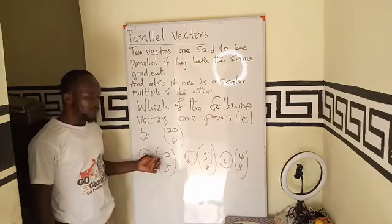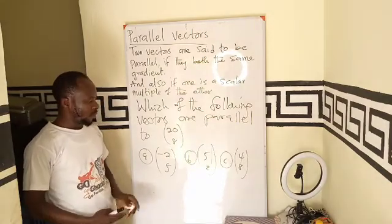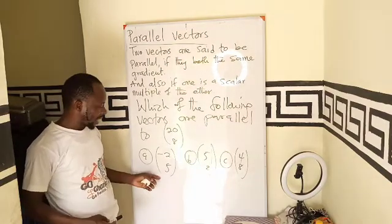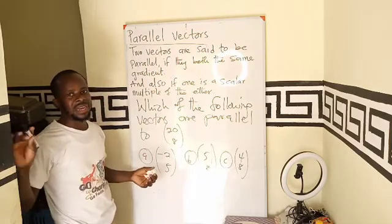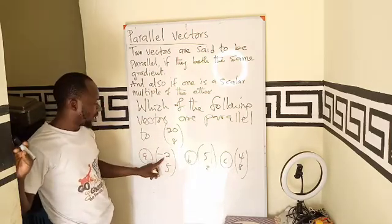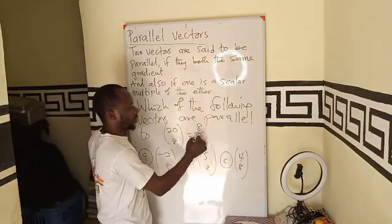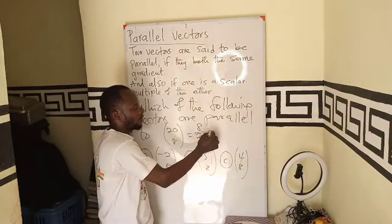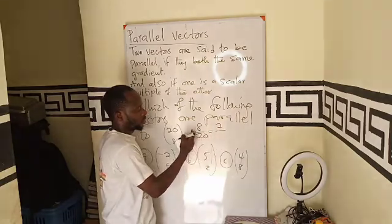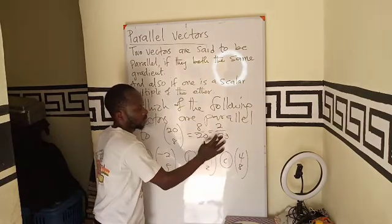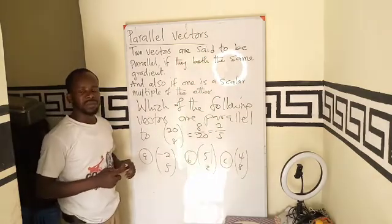Now, so if we look at them, the possible answers, we have (-2, 5), (5, 2), (4, 8). So for you to get the vector among these possible answers that are parallel to this, you can go straight forward to find the gradient. It means the gradient for this is going to be 8 over 2, and the common factor here will be 4. So 2/1, 5.